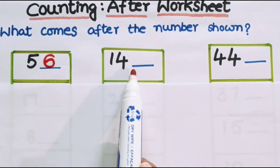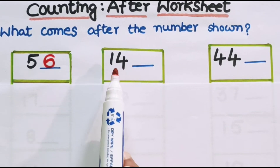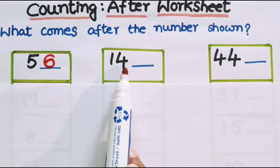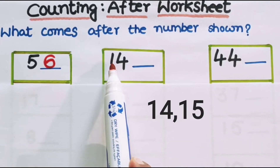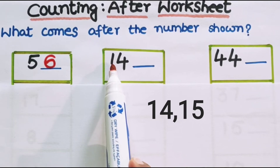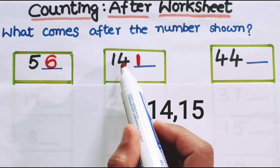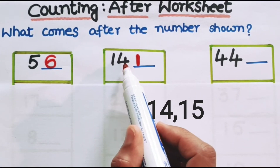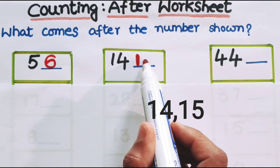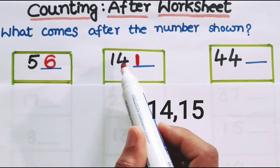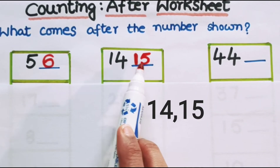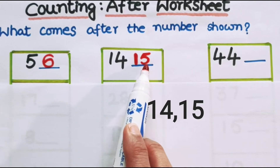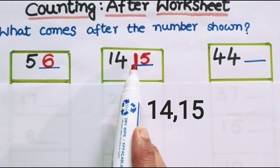Now look at the next number. It is 14. If we count one number forward after 14, what number comes? Look at the tens place value — it is 1. And the ones place value is 4. After 4, what number comes? After 4, 5 comes. So after 14, the number is 15. After 14, 15 comes.